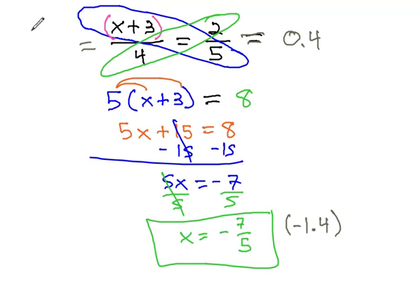Negative 1.4 plus 3 gives us 1.6 over 4, and when we divide that by 4, we also get the same 0.4 on both sides of the equation. Our answer is correct.